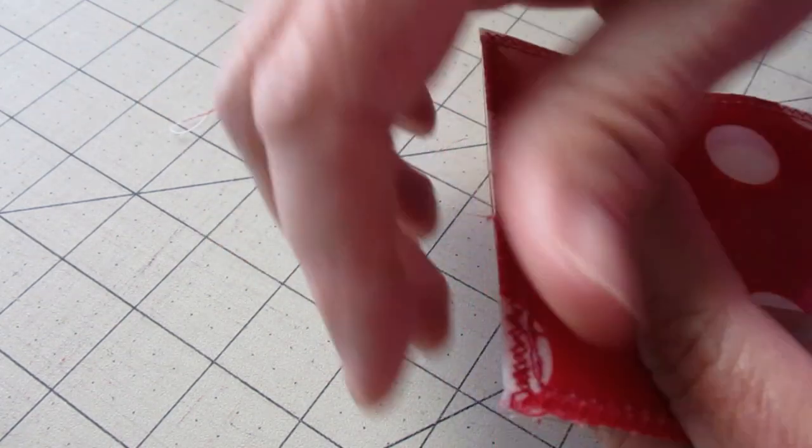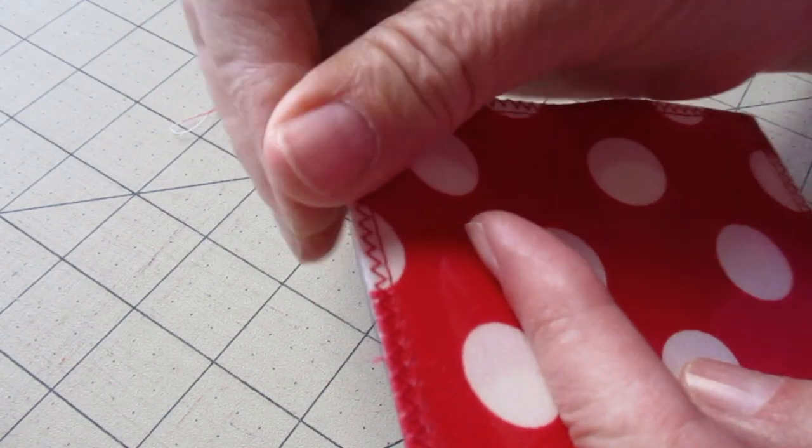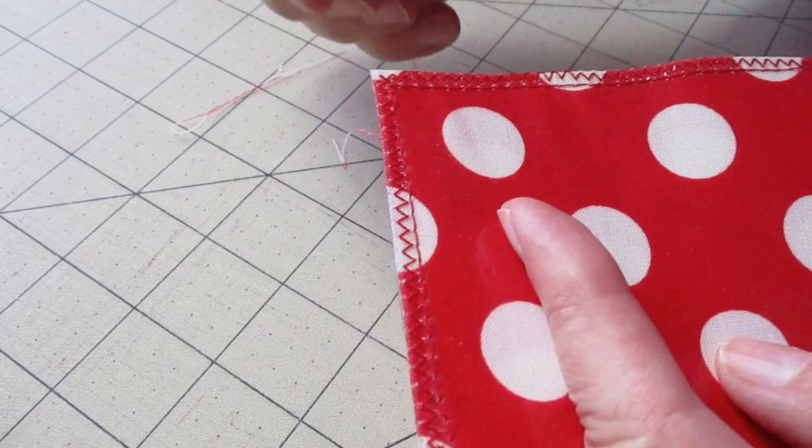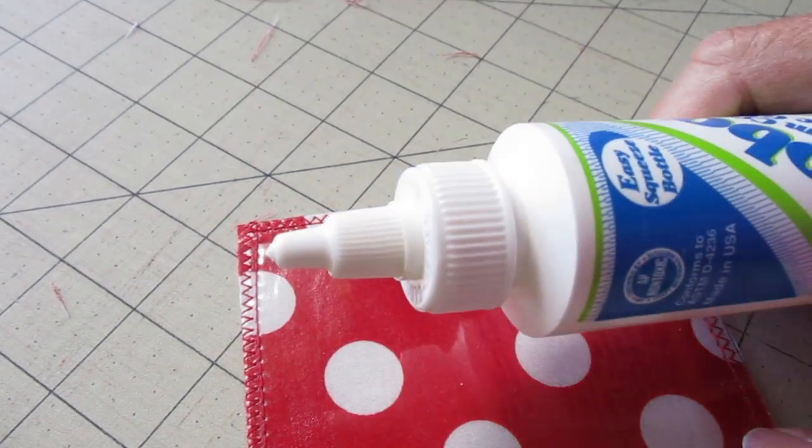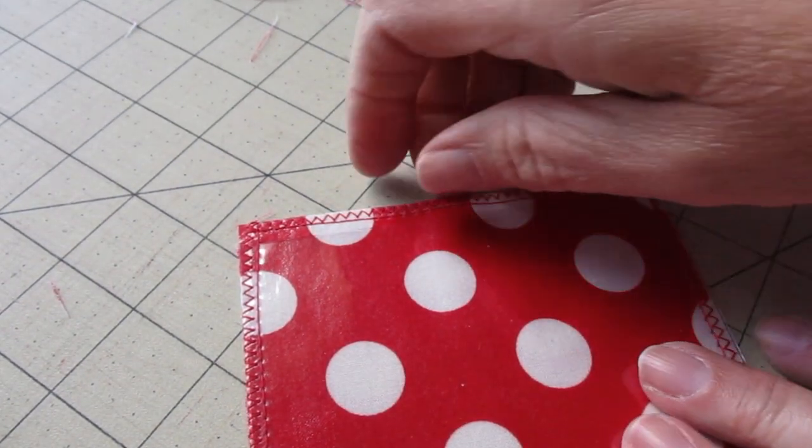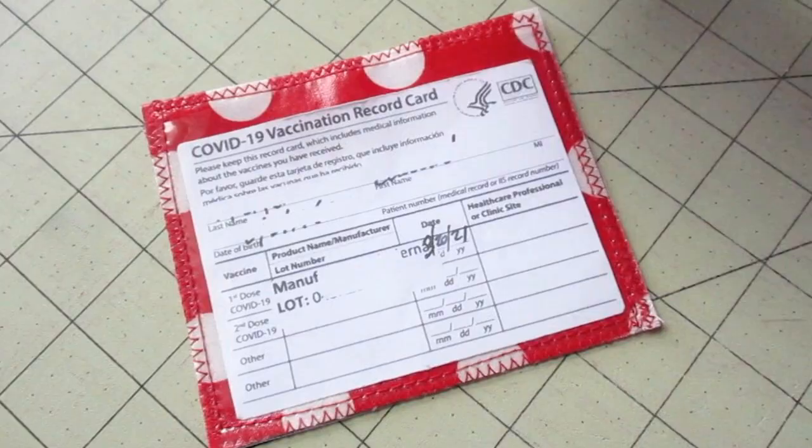Now even though we've done some zigzagging around the edge to help with the fraying, I like to add some additional fabric glue to the edges to make sure those threads stay in place. And just like that, just that easy, you have a nice protected vaccination card holder made from laminated fabric we laminated ourselves.